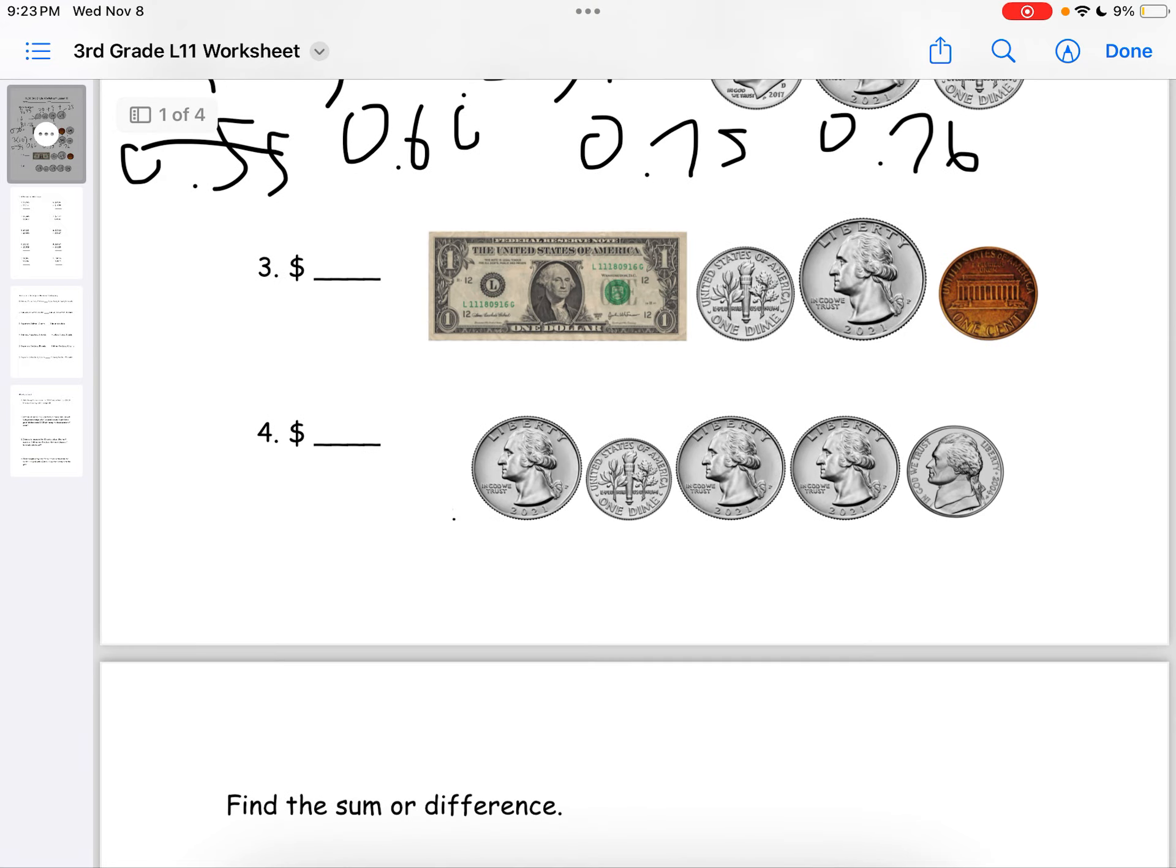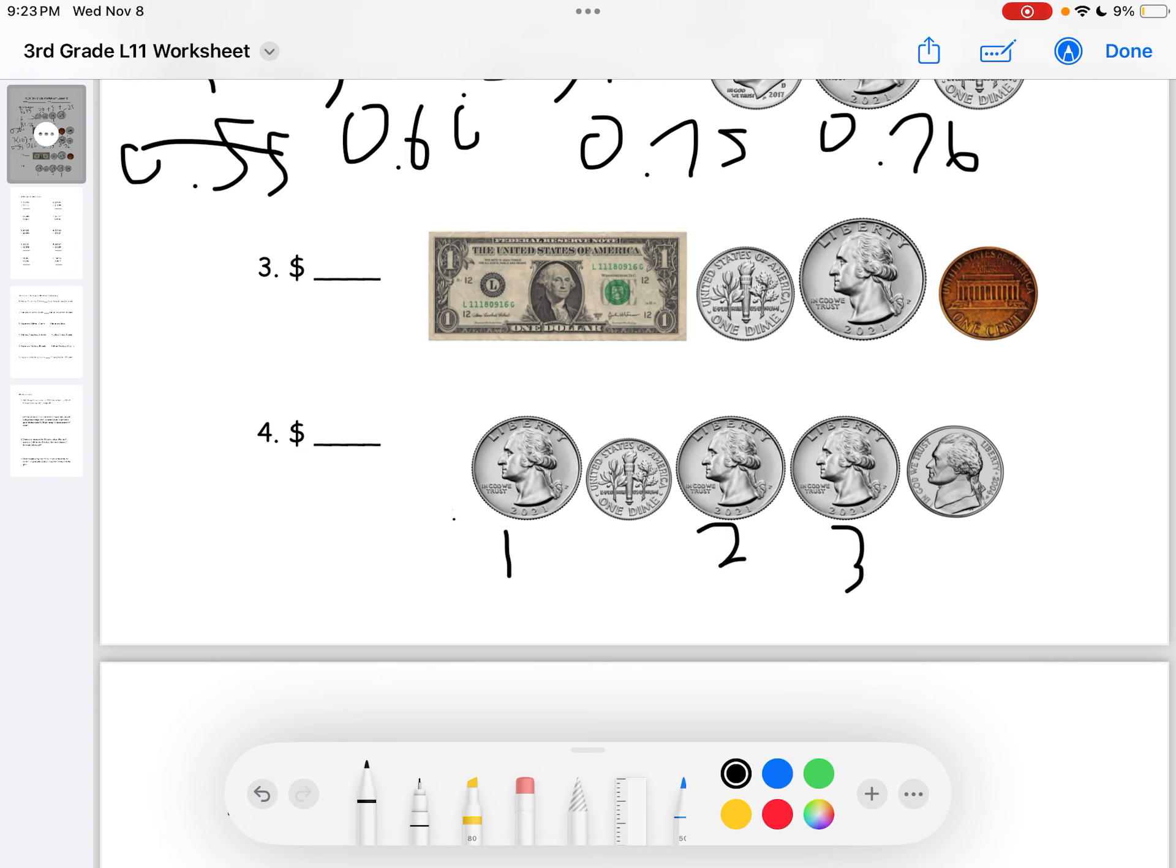We do one last question here. We do number 4. So, it looks like we have 1, 2, 3 quarters. 3 quarters. 1 dime. And 1 nickel. So, it's 25 times 3, which is $0.75. And then we also have 1 dime, which is another 10 cents. So, it's $0.85. And we also have 1 nickel. So, the answer will be $0.90 dollars. Since this is a dollar sign.